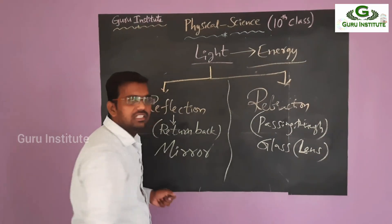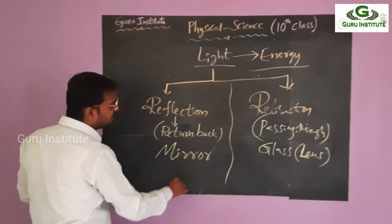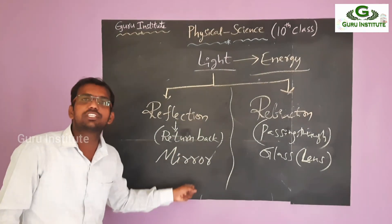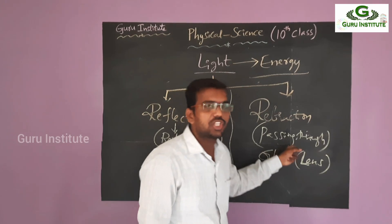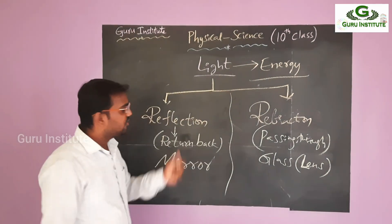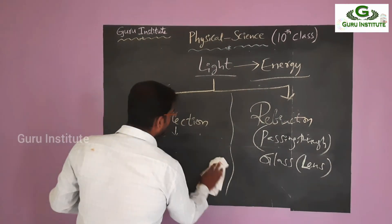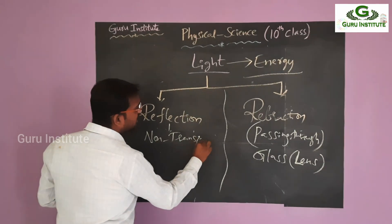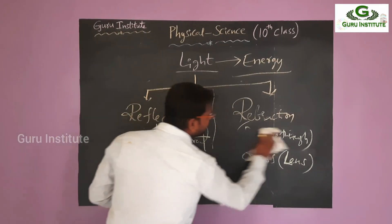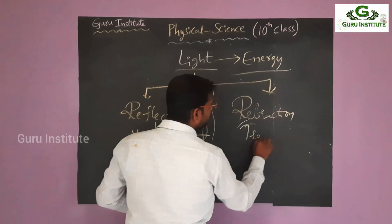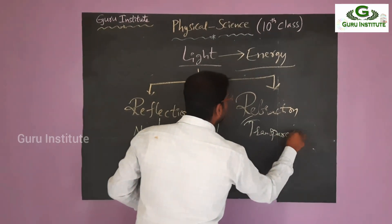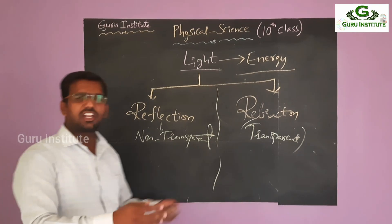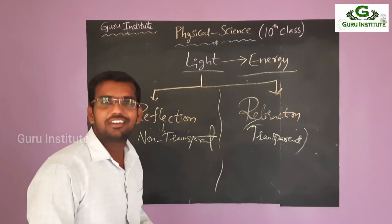Understood the differences? Simple logic. Reflection means return back — the best example is mirror, and we take a non-transparent body. Refraction means passing through — the best example is glass, and we take a transparent body. Now one doubt: up to now you are talking about non-transparent and transparent. Actually, what is meant by transparent? What is meant by non-transparent?